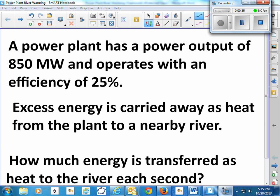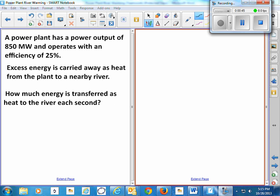First of all, we need to figure out how much energy is wasted. Let's figure out the total energy and subtract the electrical energy from that. We know that 25% of some total is equal to 850 megawatts. Let's find out the total energy put into that thing.